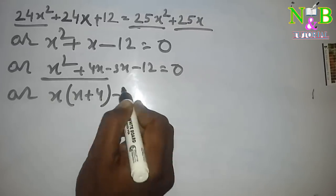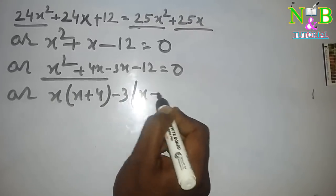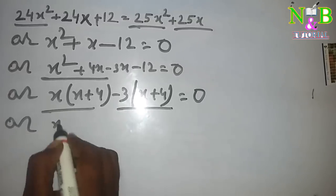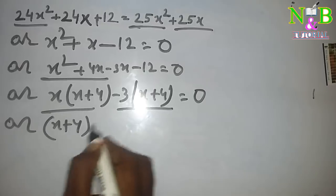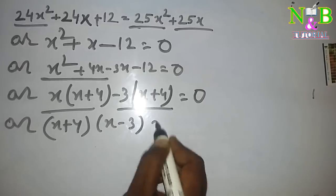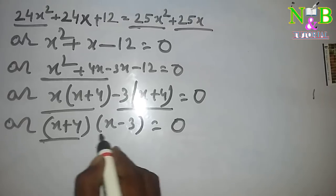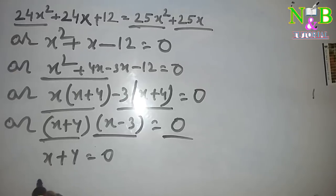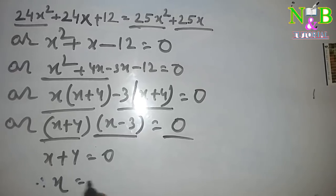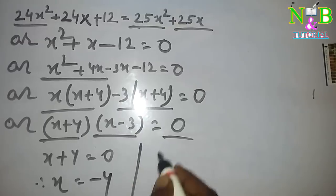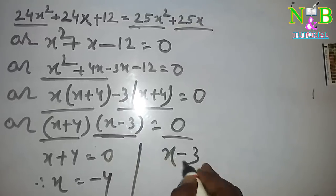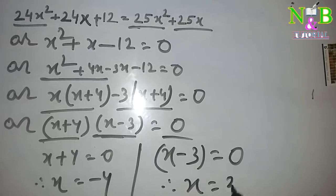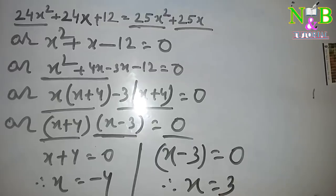x plus 4 minus 3 is equal to 0, and x plus 4 is equal to 0, then x minus 3 is equal to 0. So x equals 3 and x equals minus 4 are the solutions.